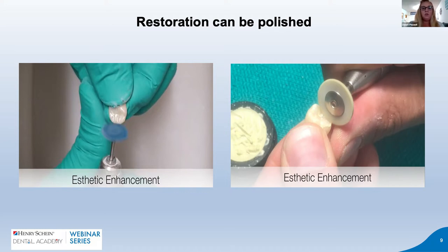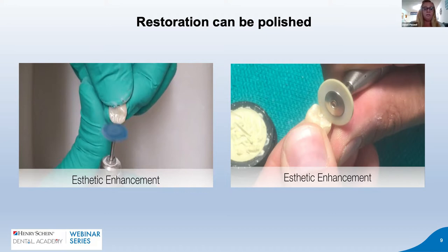Once polishing or glazing is complete, pre-treat the restoration by sandblasting the internal surface with 50 microns of aluminum oxide at 2 bars or 30 PSI. This creates a matte finish on the intaglio surface. Then clean the restoration with alcohol and air, making sure there is no moisture or oil in your airline. The restoration is then ready for cementation.